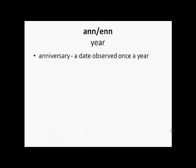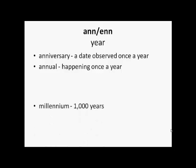'Ann' or 'en' means year. So anniversary is a date observed once a year, as in a marriage anniversary or birth anniversary. Annual means happening once a year. And millennium — 'mill' is 1000 — so millennium is a thousand years.